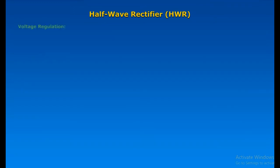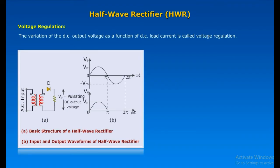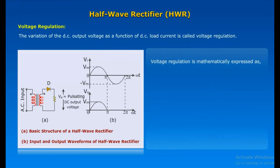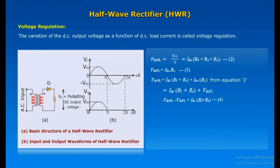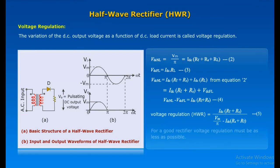Half-Wave Rectifier Voltage Regulation: The variation of the DC output voltage as a function of DC load current is called voltage regulation. Voltage regulation is mathematically expressed as shown. VDC(NL) is the DC output voltage when no load current is being drawn, and VDC(FL) is the DC output voltage when full load rated current is being drawn.